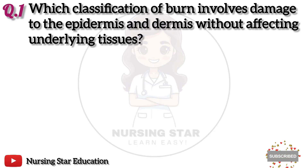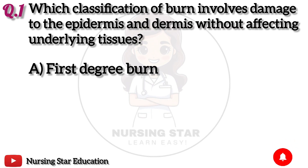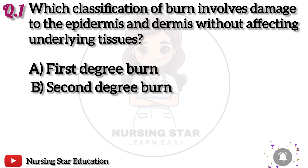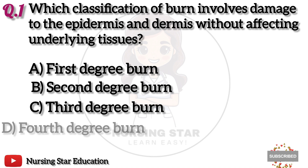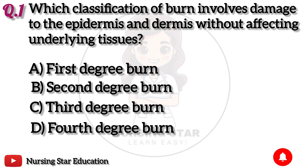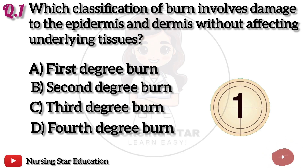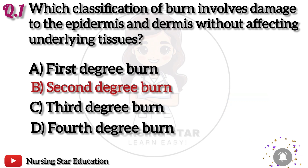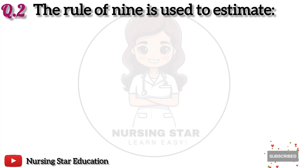Question 1: Which classification of burns involves damage to the epidermis and dermis without affecting underlying tissues? Option A: First degree burn. B: Second degree burn. C: Third degree burn. D: Fourth degree burn. The correct answer is B: Second degree burn.